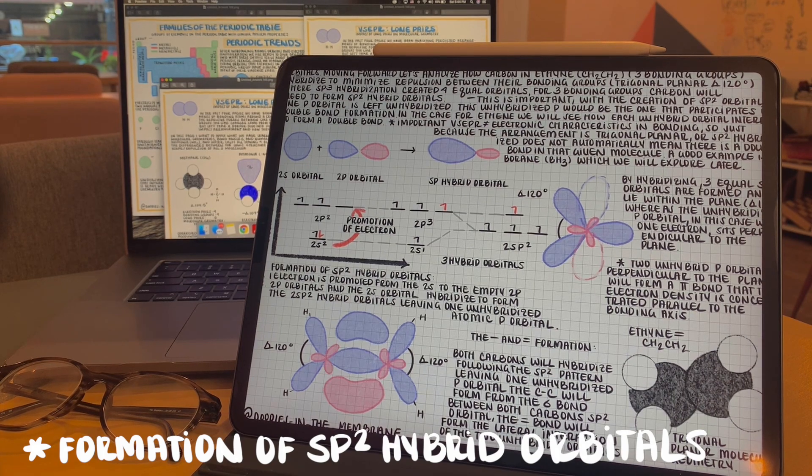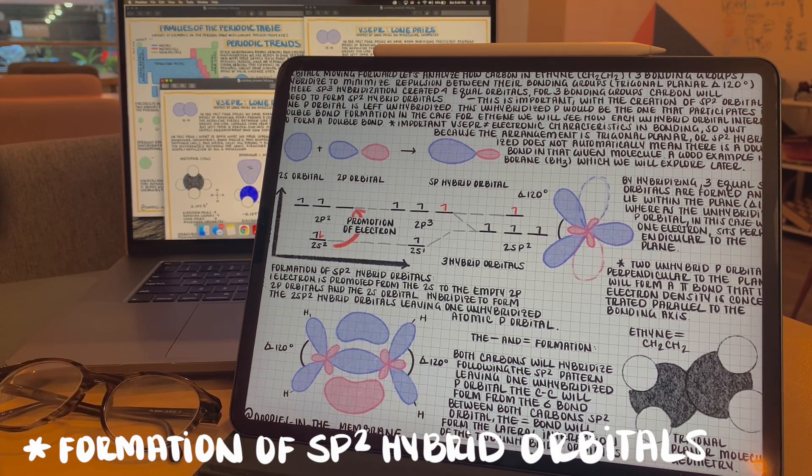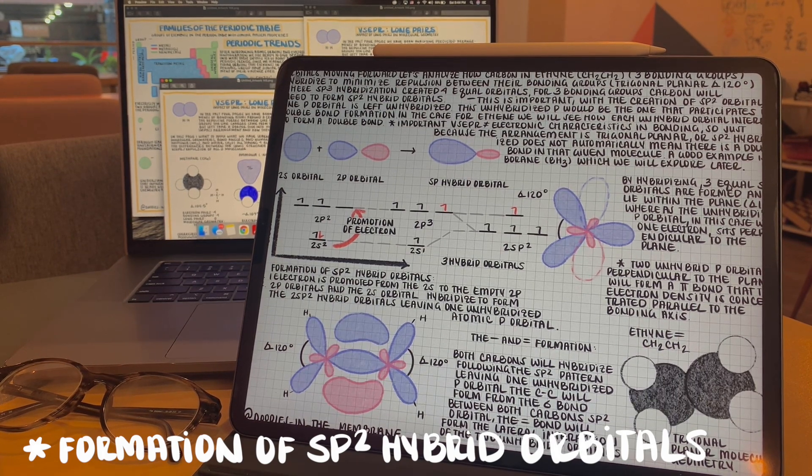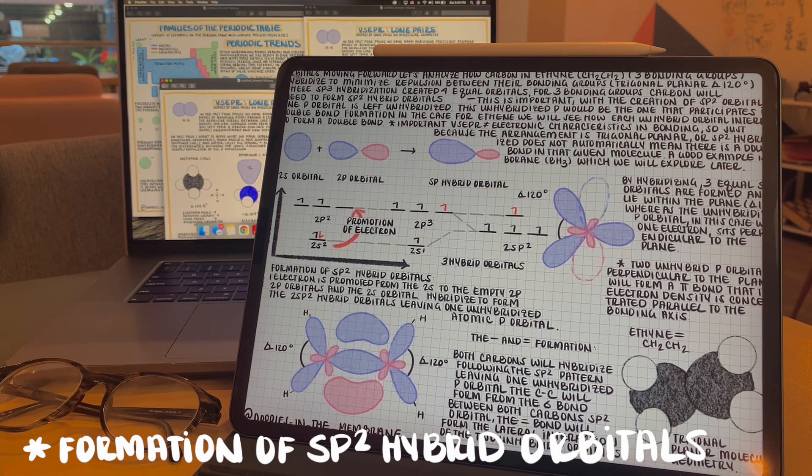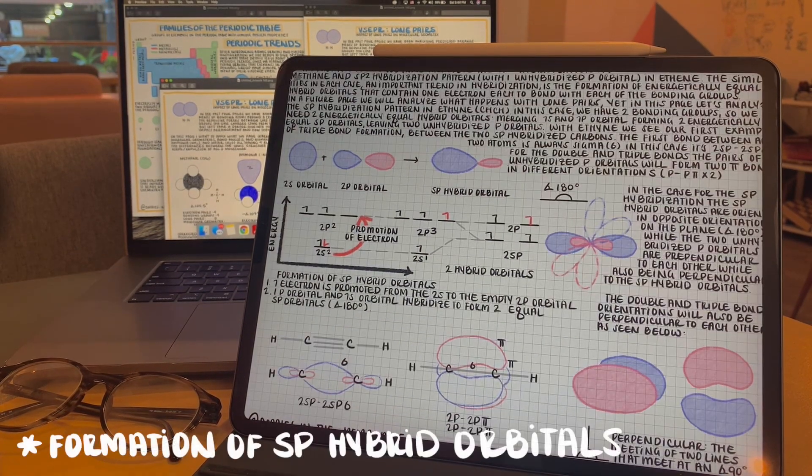Where the hybrid orbitals are creating the single bonds with the three surrounding atoms, we see that the non-hybrid p orbital forms the double bond with the adjacent carbon's p orbital through lateral interactions forming that carbon-carbon double bond.